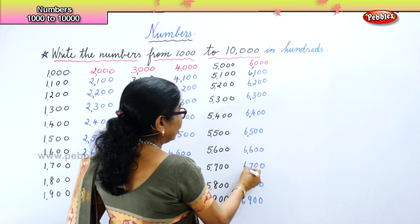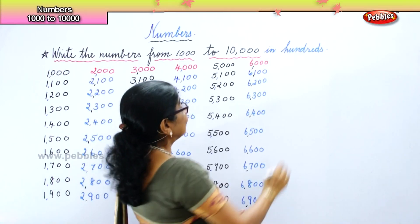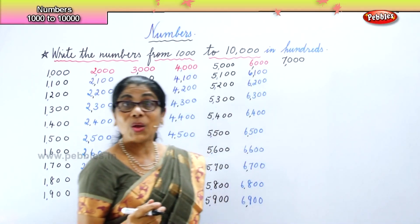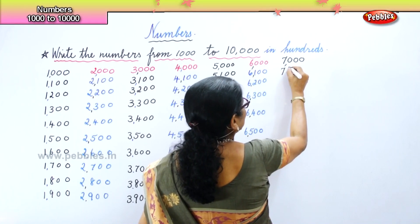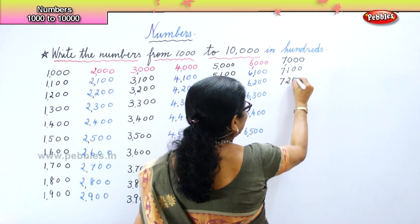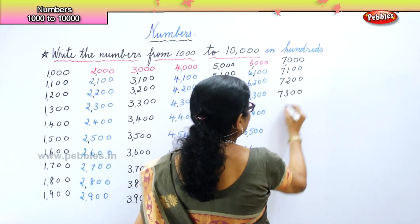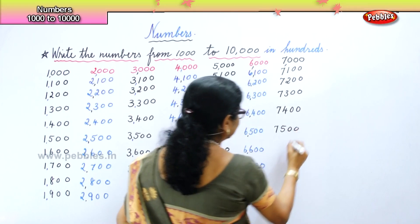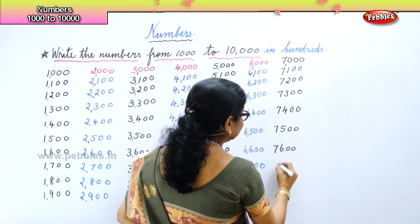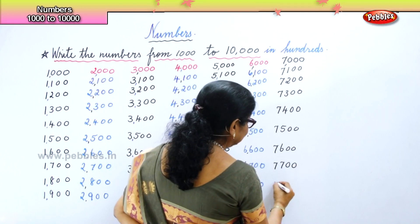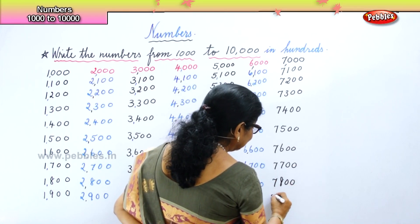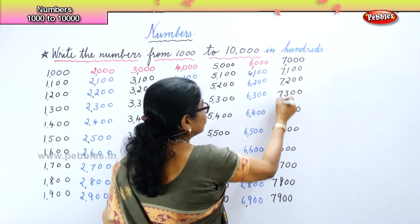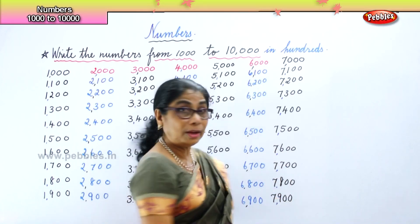What is the next? Seven thousand — good. Put a tiny little comma to separate out hundreds. Now we have seven thousand. Write seven thousand one hundred, seven thousand two hundred, seven thousand three hundred, seven thousand four hundred, seven thousand five hundred, seven thousand six hundred, seven thousand seven hundred, seven thousand eight hundred, seven thousand nine hundred. Put a little comma for each.